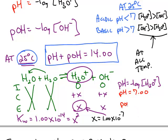And if you do the same thing for pOH, the negative log of hydroxide. Hydroxide, in this case, is also 10 to the negative 7th. So the pOH will also be 7.